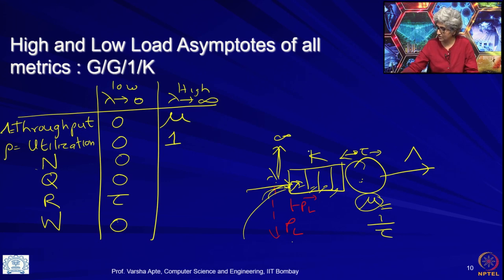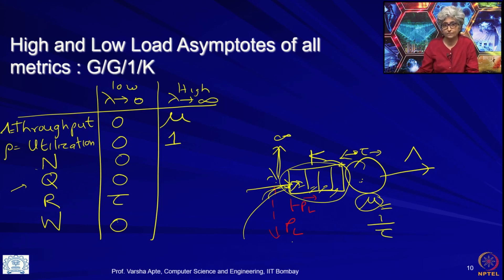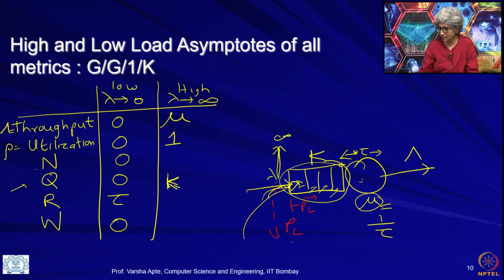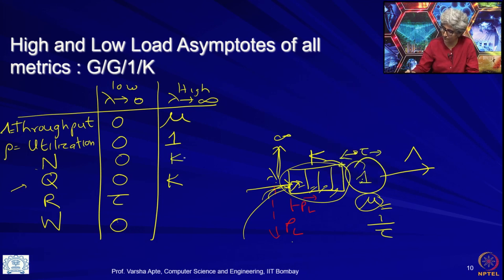Number in the system and queue at high load: starting with q — as lambda keeps going to infinity, lots of requests are coming in, so the queue is just going to be full all the time. So q will go to k, which is the size of the buffer. Since q goes to k and there is also one request in the server, n goes to k plus 1.